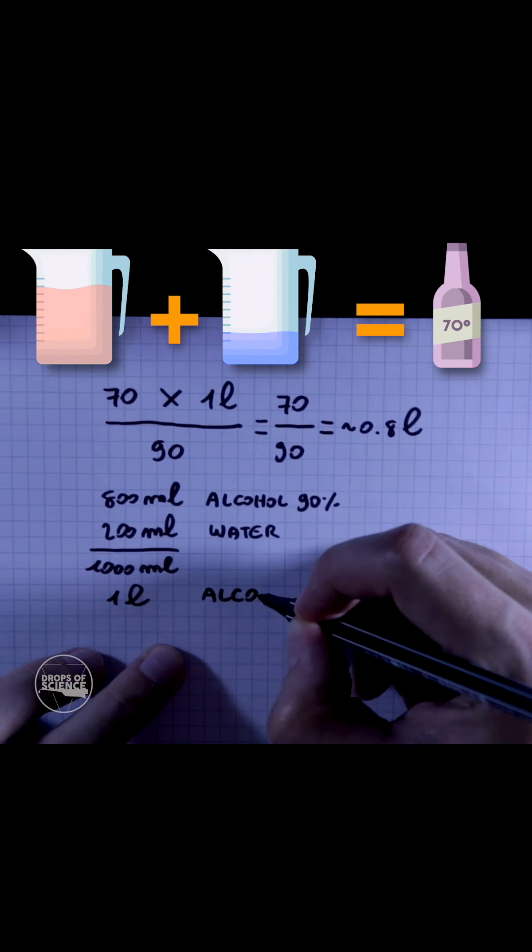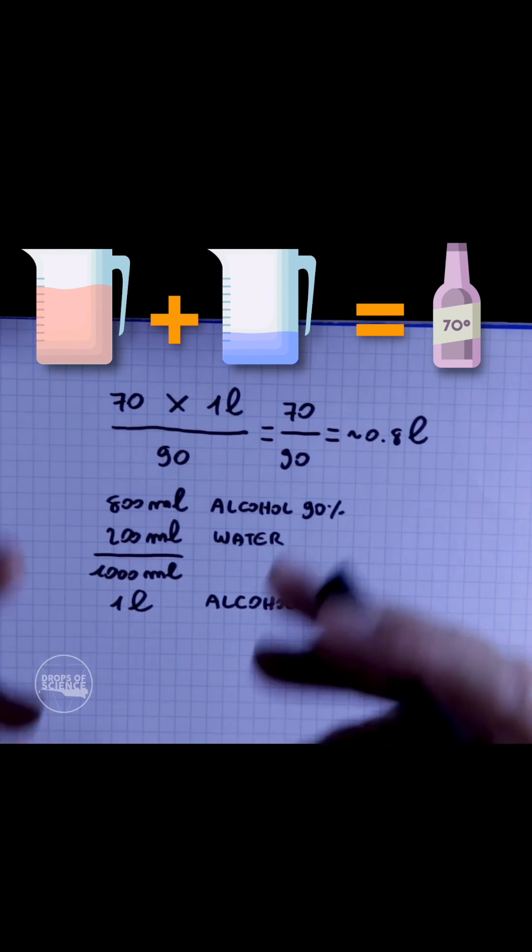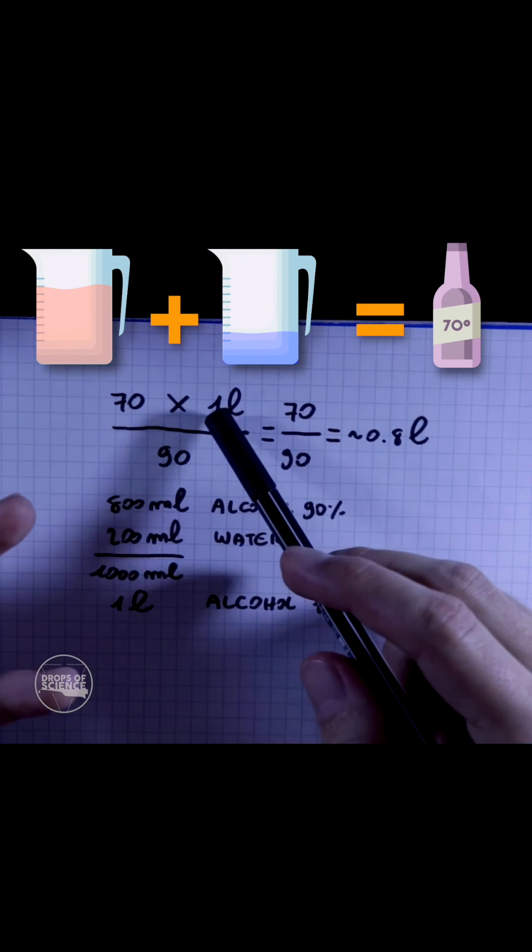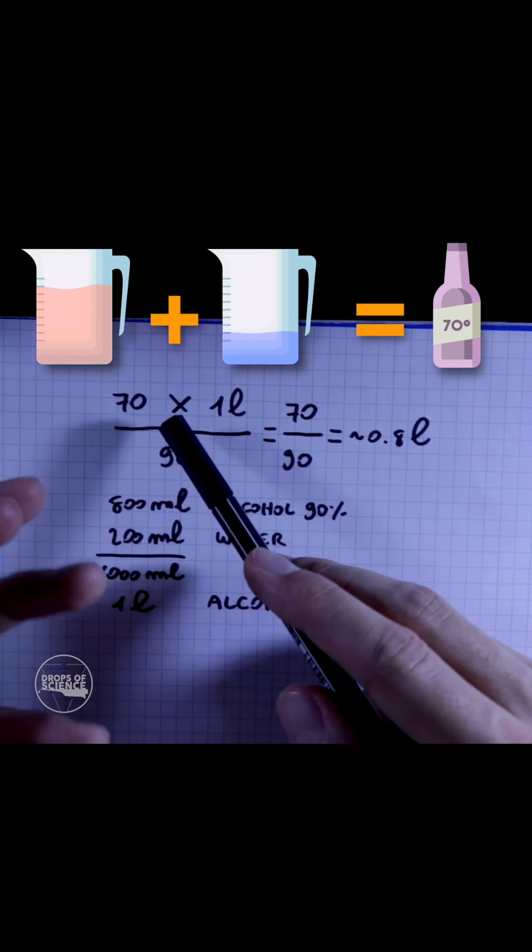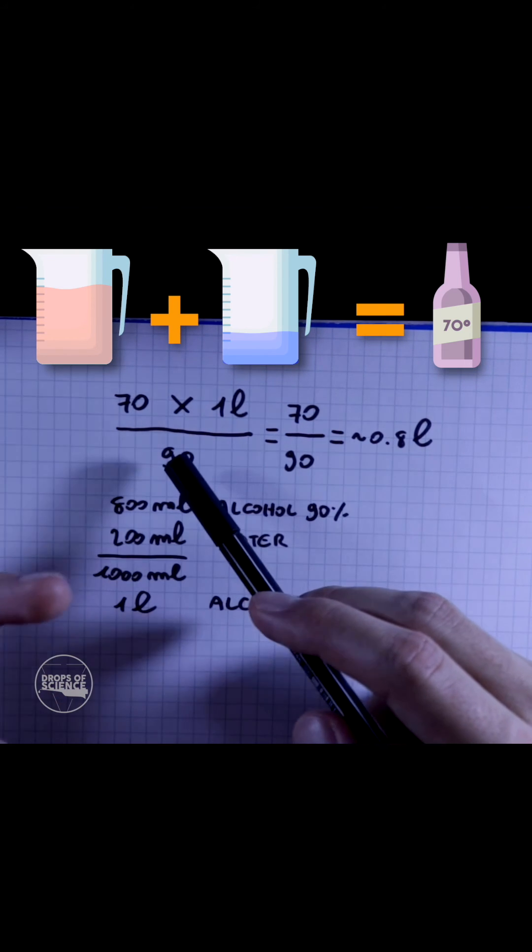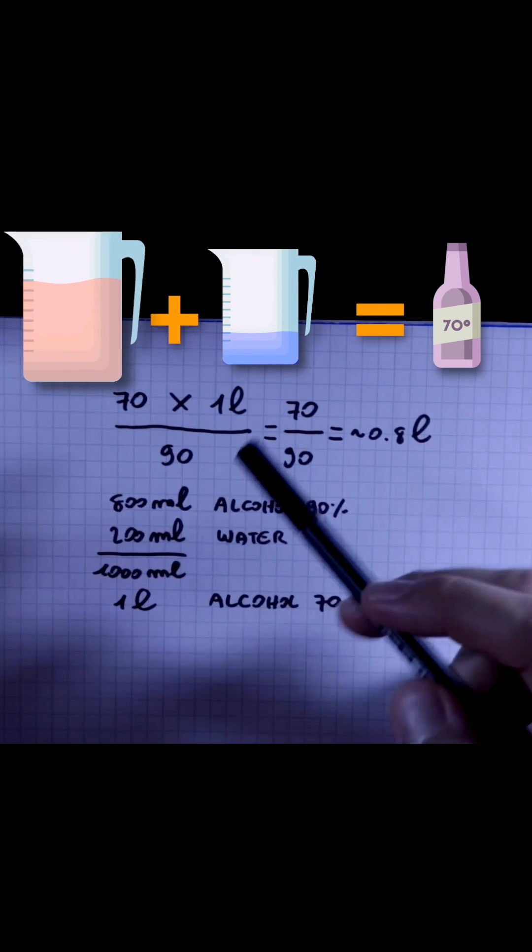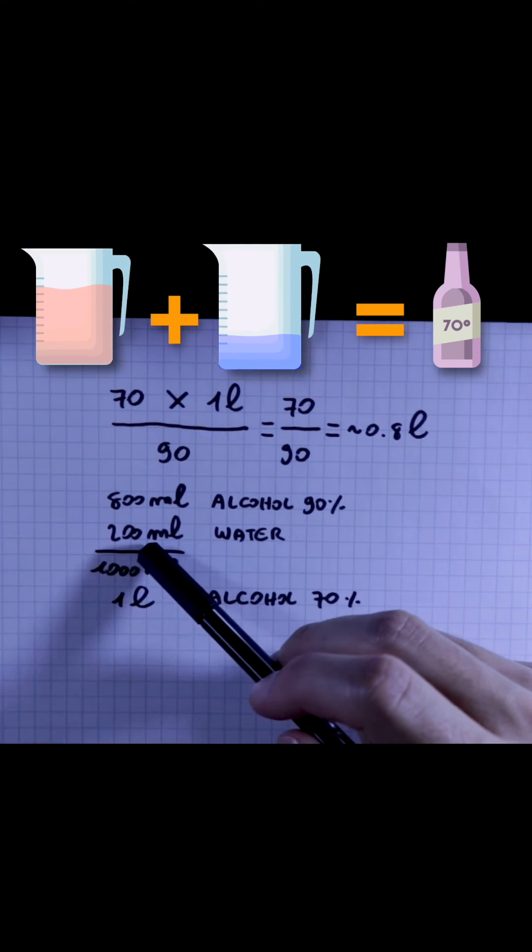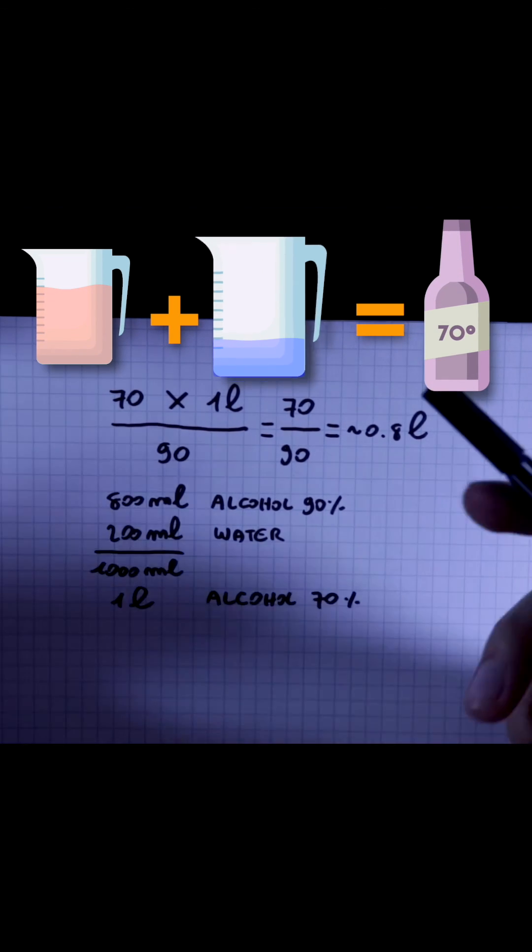So to summarize, if you want to make one liter of 70% alcohol starting from 90% alcohol that you got from a store, the only thing you have to do is take 800 milliliters of the concentrated alcohol, add 200 milliliters of water, and then that's it, you're ready to go.